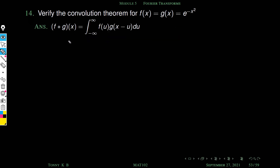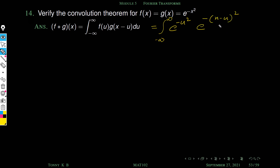Next we find f star g by definition: integral from minus infinity to plus infinity of f(u) g(x minus u) du. Since f(x) = g(x) = e^(−x²), this becomes integral from minus infinity to plus infinity of e^(−u²) times e^(−(x−u)²) du.